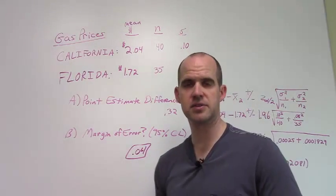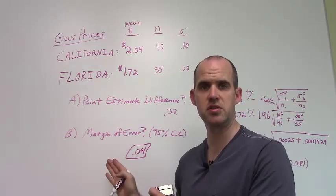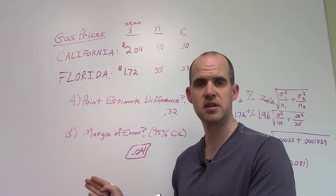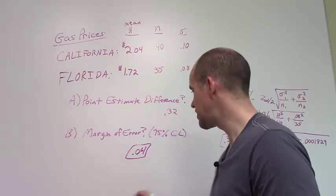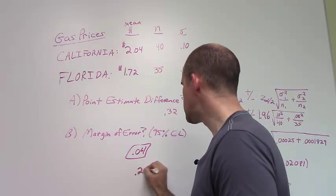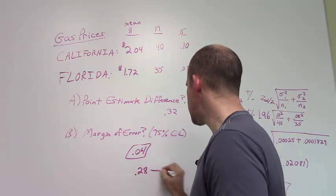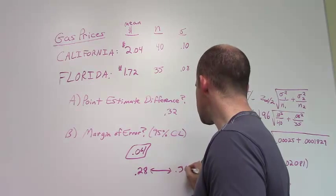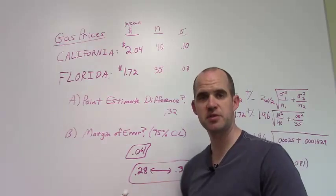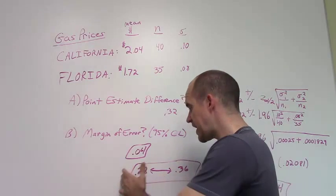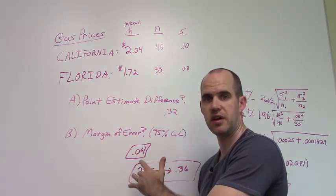So a better way of saying it is, the difference between the two is 32 cents. But we can be 95% confident that in the real population, it's somewhere between 28 cents and 36 cents. And there's only a 5% chance that the difference would actually be outside of this interval.